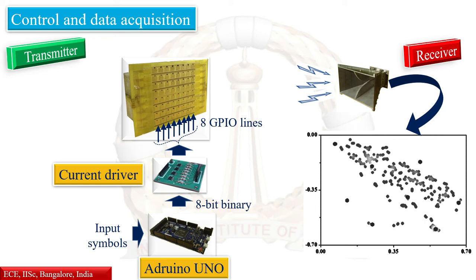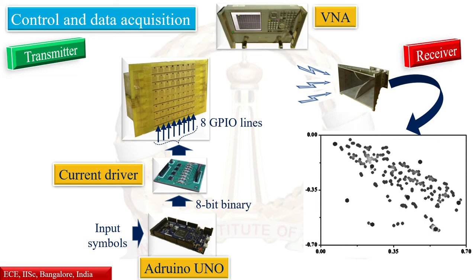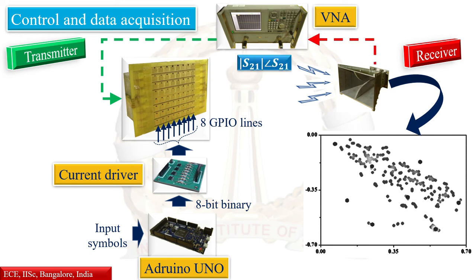The transmitting antenna is connected to a vector network analyzer operating in continuous wave mode. The received power is returned to the second port of the VNA, and the S21 values are measured.